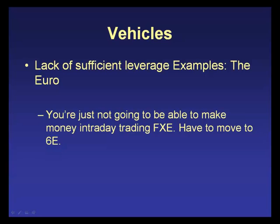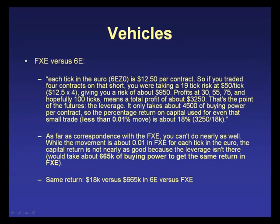If you're trying to trade the Euro using FXE, currencies don't move much on a percentage basis — a 1/100th of a percent move is a decent-sized move. Trading FXE would give you nothing unless you have a massive position. But with a futures contract, four contracts costs about $18,000 in capital, and a decent swing could yield over $3,000 — about an 18% return, versus needing well over half a million dollars using the ETF for the same payoff.